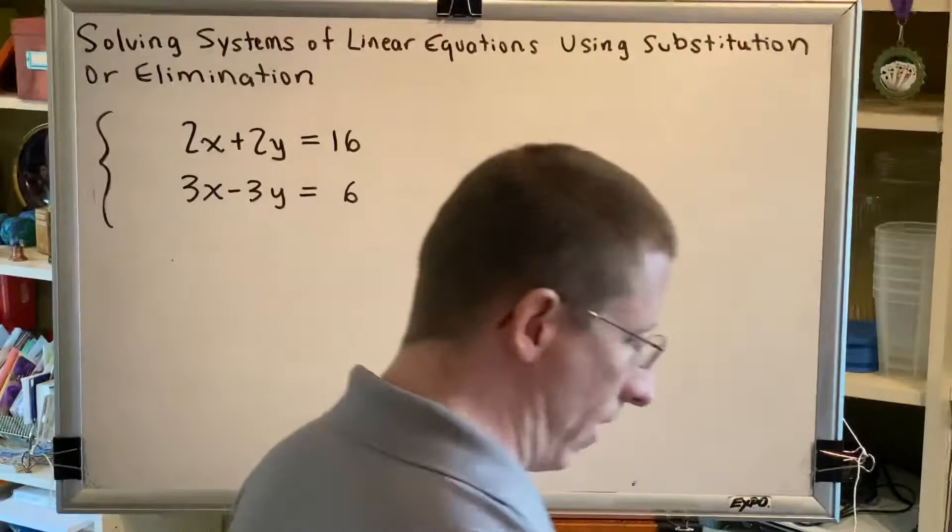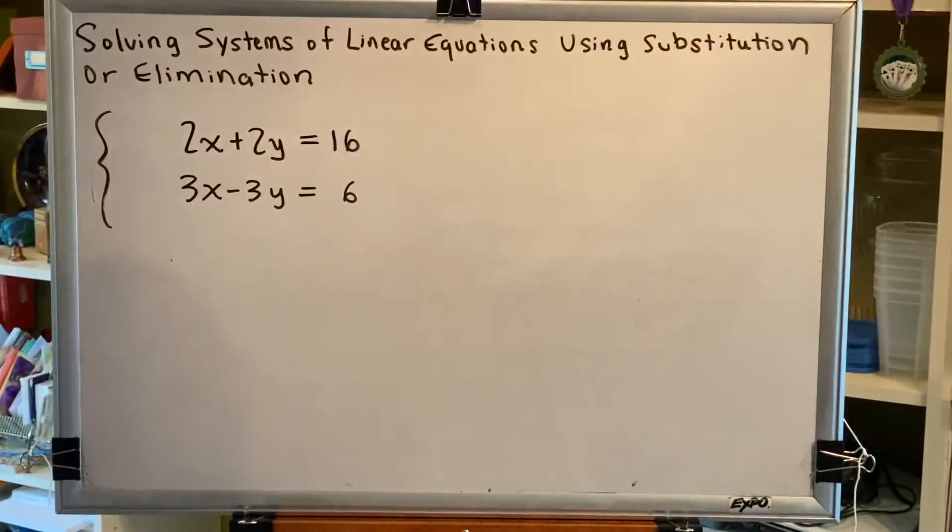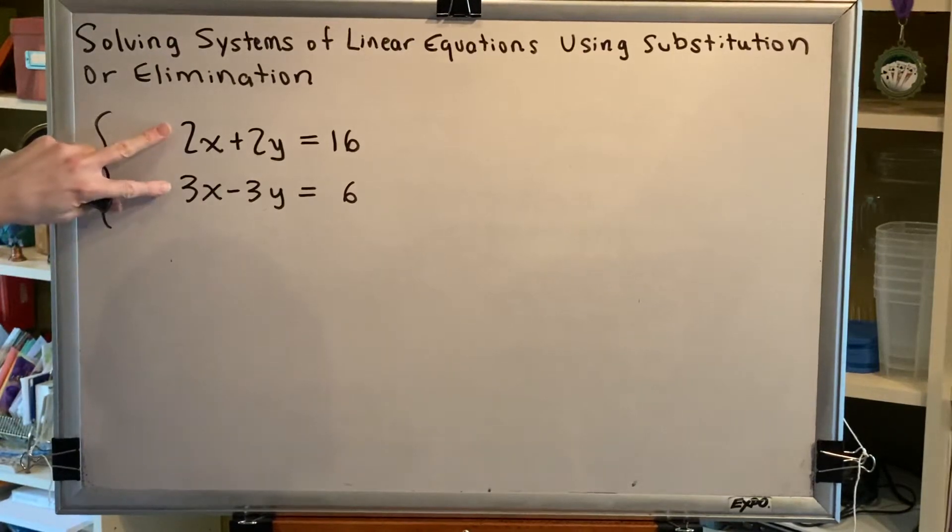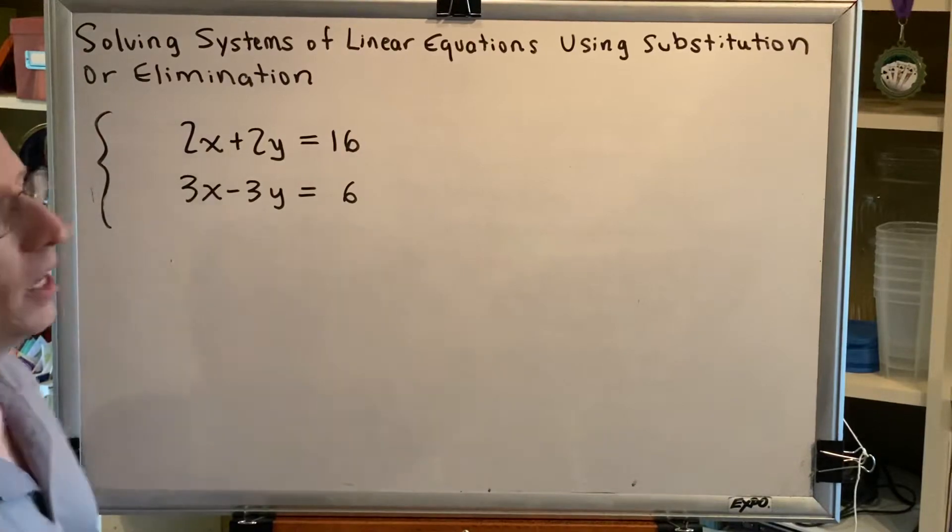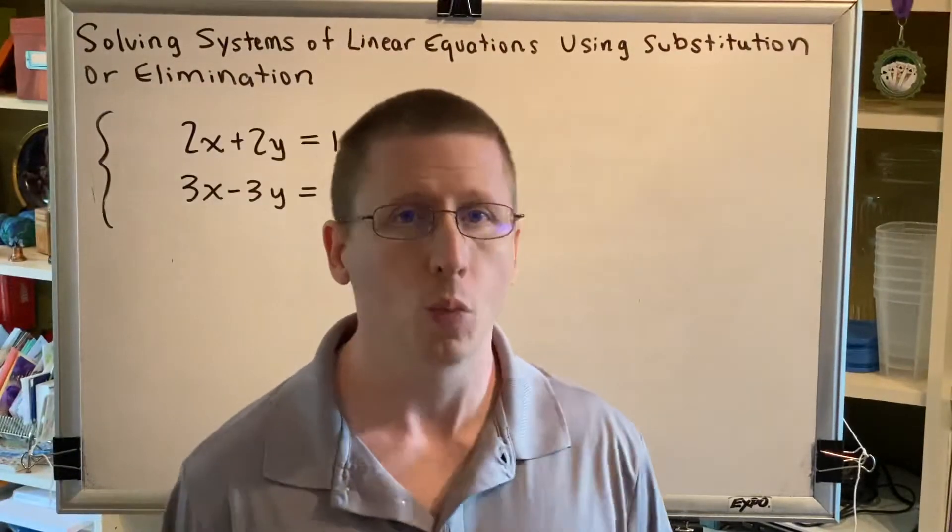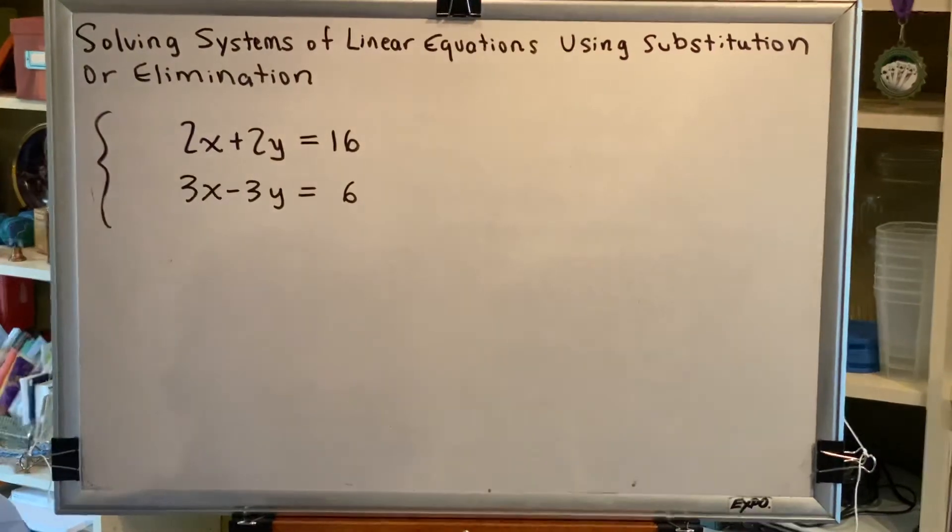All right, so how does elimination work? The goal of elimination is to create term opposites. You either want your x terms in both equations to be opposites or your y terms in both equations to be opposites, and it's up to you which variable you want to try to create the opposites for. So let's just pick x for this particular problem.